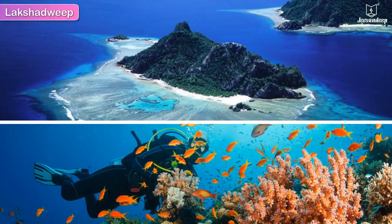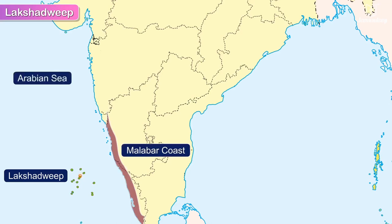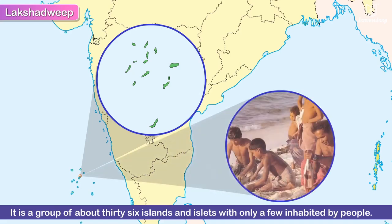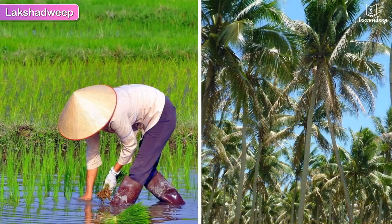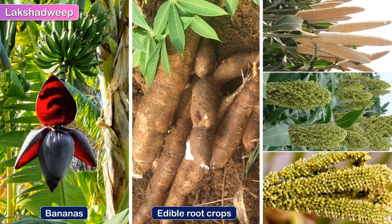The Lakshadweep Islands are located near the Malabar coast in the Arabian Sea. It is a group of about 36 islands and islets, with only a few inhabited by people, and they form the smallest union territory of India. Like all coastal areas, rice and coconut are the main crops. Lakshadweep also grows bananas, edible root crops and millets.